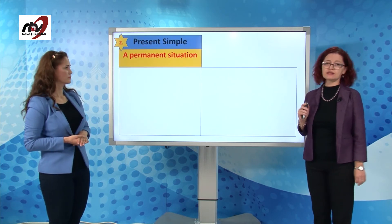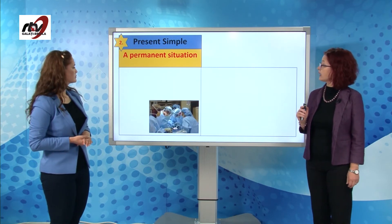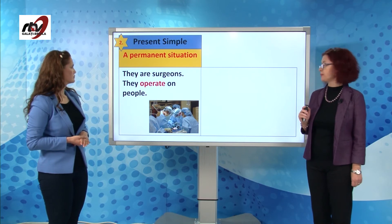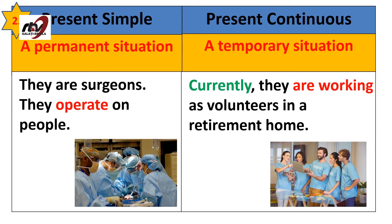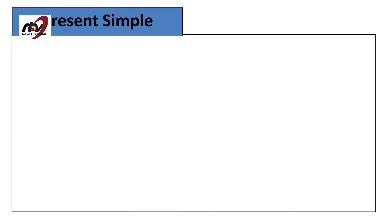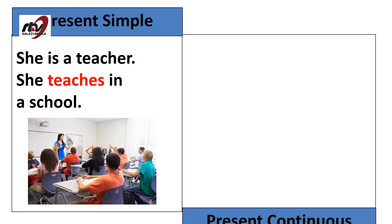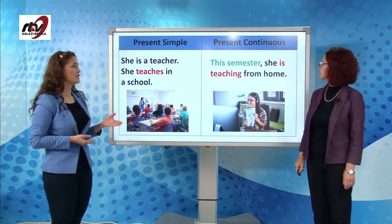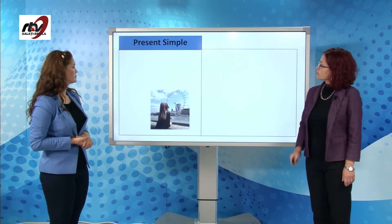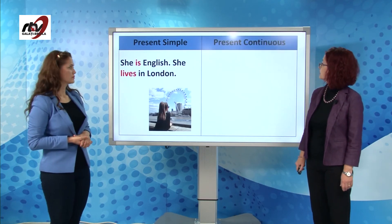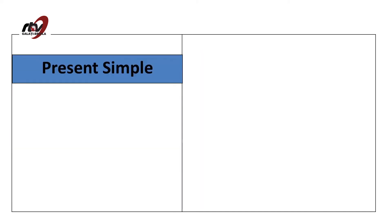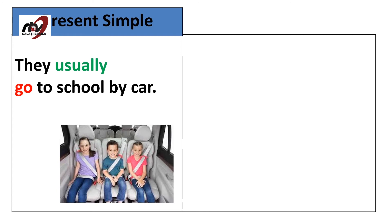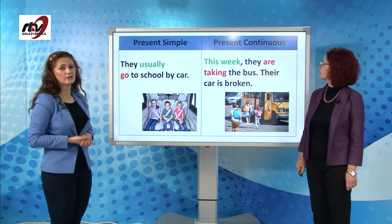The second use: present simple expresses a permanent situation — they are surgeons, they operate on people. Present continuous is for a temporary situation happening for a limited period of time — currently they are working as volunteers in a retirement home, for a couple of weeks or months. She is a teacher, she teaches in a school — this semester she is teaching from home. She is English, she lives in London, but at present she is living in Rome because she is taking part in an exchange program. They usually go to school by car — this week they are taking the bus, their car is broken.